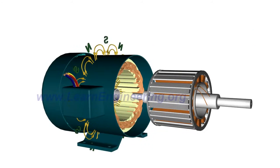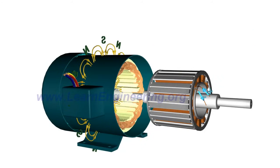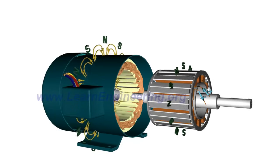Rotor is excited by a DC power supply, so it acts like a permanent magnet. Alternatively, rotor can also be made of permanent magnet.